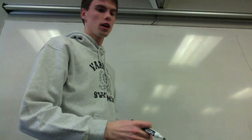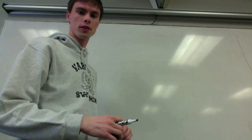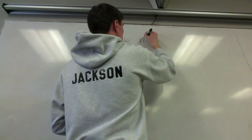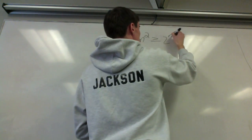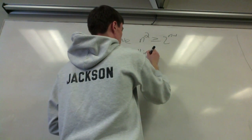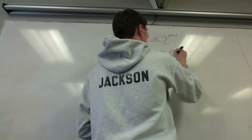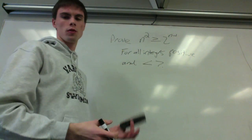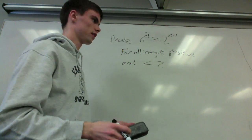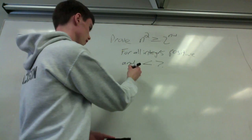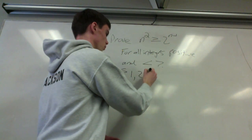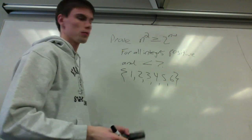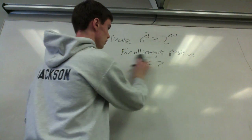Now the second example: we want to prove that n squared is greater than or equal to 2 to the n minus 1, for all positive integers less than 7. This is good for proof by cases because we have a finite set of cases to check — positive integers less than 7 gives us the set: 1, 2, 3, 4, 5, and 6. If we check all of these, we can prove or disprove the statement.